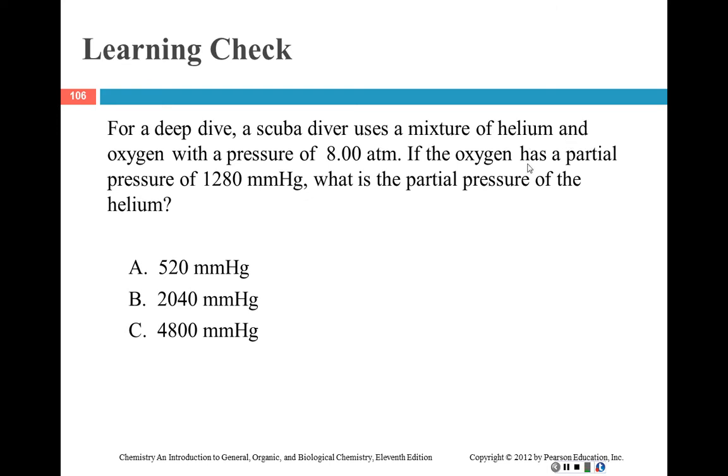We're going to look at this one: For a deep dive, a scuba diver uses a mixture of helium and oxygen with a pressure of 8 atmospheres. If the oxygen has a partial pressure of 1280 millimeters of mercury, what is the partial pressure of helium? We know that the total pressure is equal to the partial pressure of helium plus the partial pressure of oxygen. So we have 8 atmospheres is equal to helium plus oxygen, which is 1280 millimeters of mercury.